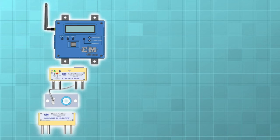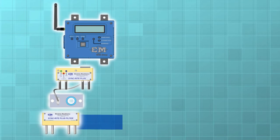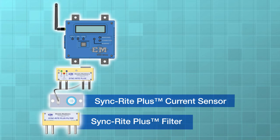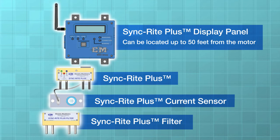The online monitoring package includes all the components to take full advantage of all the Sync-Rite Plus system benefits: Sync-Rite Plus field current sensor, Sync-Rite Plus transmitter, and the display panel, which can be located up to 50 feet from the motor.